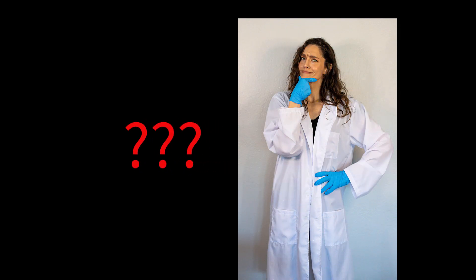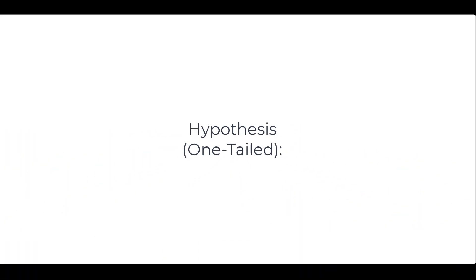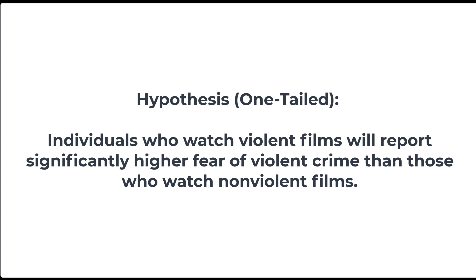Here's another example. Have you ever wondered if watching violent films makes a person more fearful of violent crime? Let's say you wanted to research this and you decided to form a one-tailed hypothesis. The hypothesis would be that individuals who watch violent films will report significantly higher fear of violent crime than those who watch non-violent films. The dependent variable is fear of violent crime, and the independent variable is film exposure, whether you watch violent films or you don't.